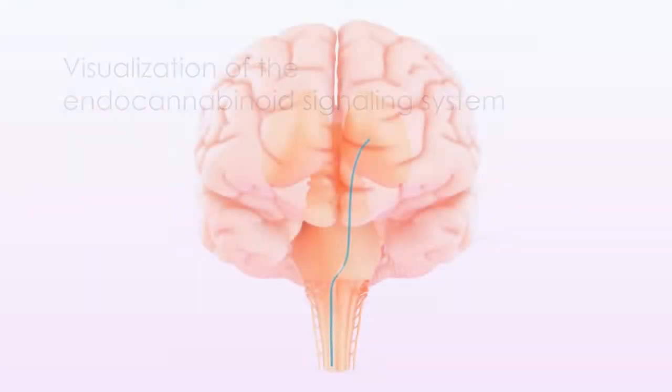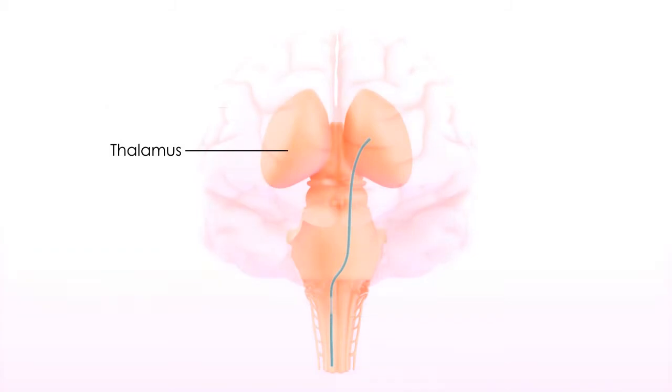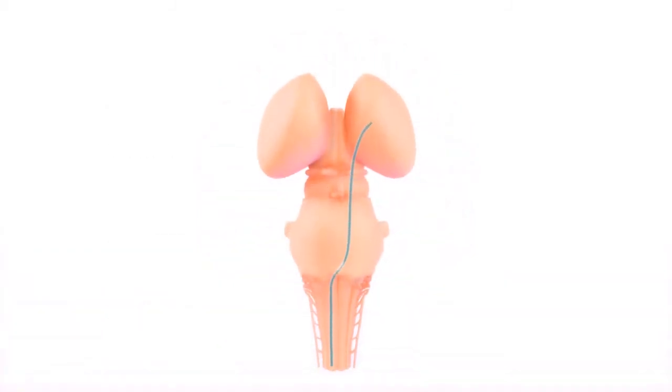In the normal transmission of pain, ascending nociceptive signals travel up the spinal thalamic pathway to the thalamus, where they are processed and relayed to cortical and other areas.